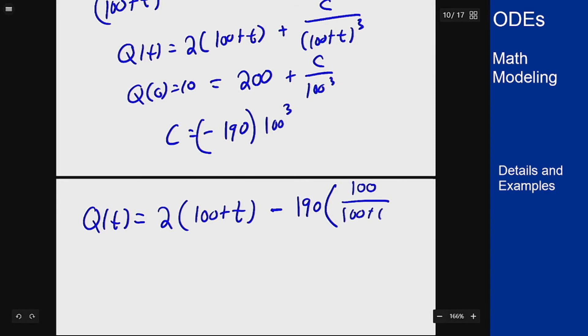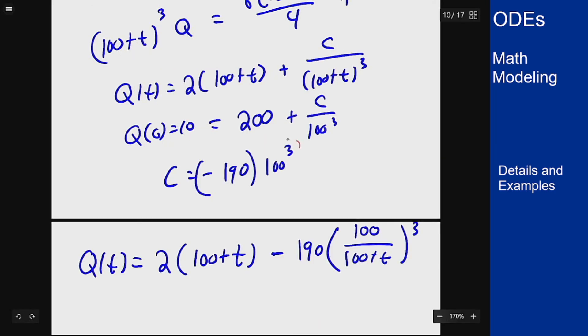As Q(t) is 2 times 100 plus t minus 190 times 100 over 100 plus t cubed. Since I've grouped this 100 cubed with this 100 plus t cubed to make it look a little bit nicer in the expression.